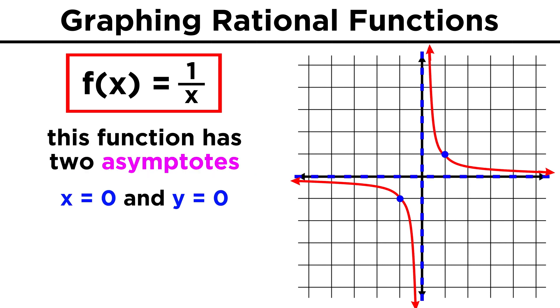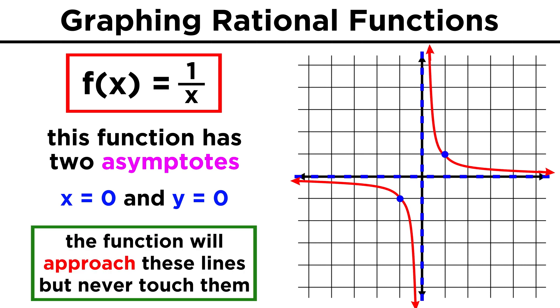What we can say about this function is that it has two asymptotes that can be represented by x equals zero and y equals zero. These are lines that the function approaches, getting closer and closer, but never quite touching.